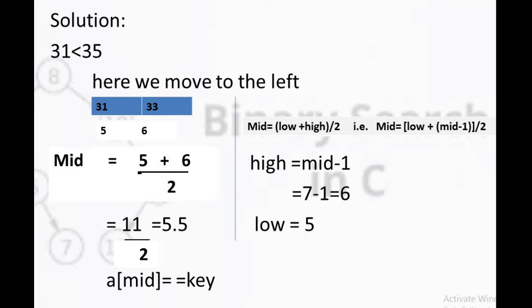So we move to the left side of this element list. According to our rules, 31 and 33 are the element trees. 5 and 6 are the indices. According to our formula, mid equals low plus high divided by 2. We consider 5 as low and 6 as high. 11 divided by 2 is 5.5, so we consider 5 as the mid. 5th index has the value 31. So here we found the searched element, and our procedure will stop here.